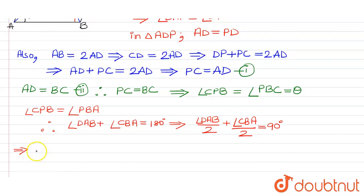Now DAB by 2, this will be equal to angle PBA. And CBA upon 2, this will give you PBA, angle PBA. So this equals 90 degrees.